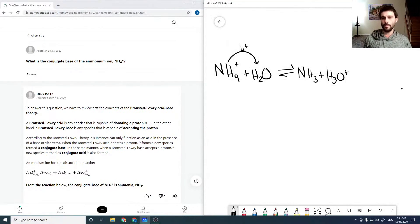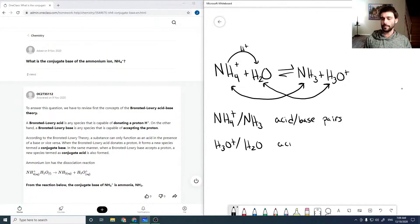Okay, so these two here are conjugate pairs, and these two here are conjugate pairs. NH4+ and NH3 are acid-base pairs, and H3O+ and H2O are acid-base pairs.